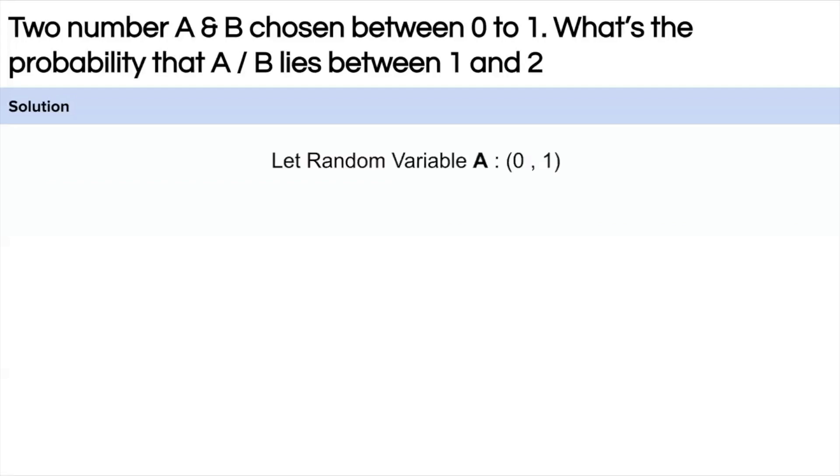Let's assume that A is the random variable which is between 0 to 1 and B is another random variable which is also between 0 to 1. Why? Because in the question it has given that two numbers A and B are lying between 0 to 1.